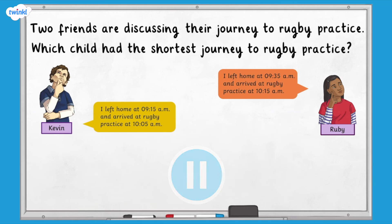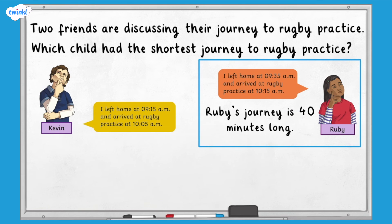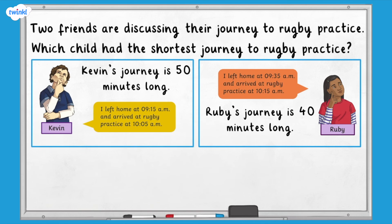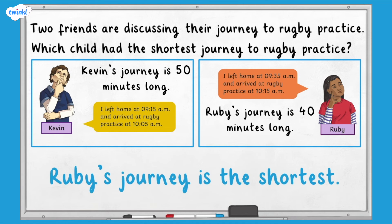Have you finished? Excellent. Here are the answers. Ruby's journey is 40 minutes long. Kevin's journey is 50 minutes long. Therefore, Ruby's journey is the shortest.